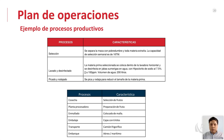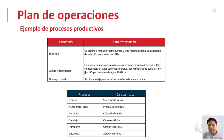Ejemplos de procesos productivos: para la maca, el proceso incluye selección (separar la maca con podredumbre y materia extraña, capacidad semanal de 16 toneladas métricas), lavado y desinfectado (la materia prima seleccionada se coloca en la lavadora horizontal y se desinfecta en jabas sumergidas en agua con hipoclorito de sodio al 7.5% a 100 ppm, volumen de agua de 200 litros), y luego picado y rodajado para reducir el tamaño de la materia prima.